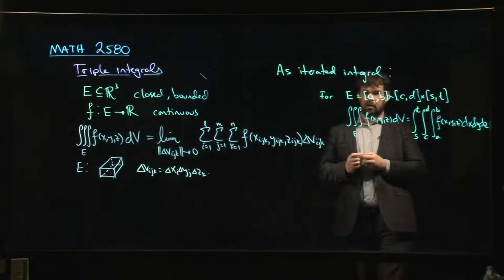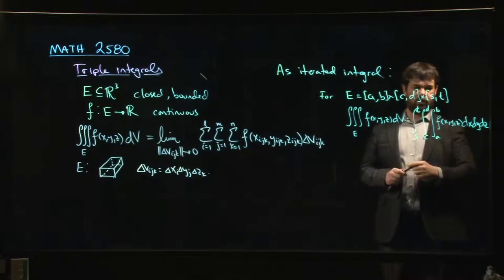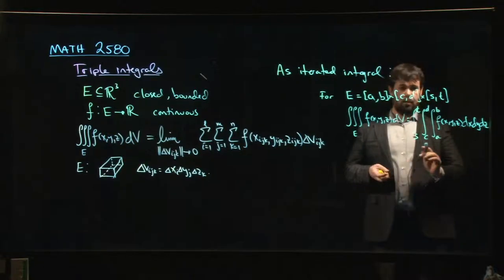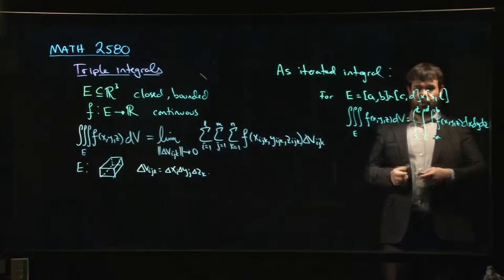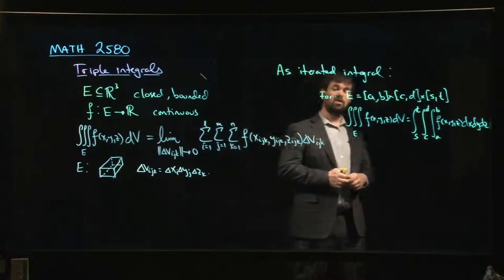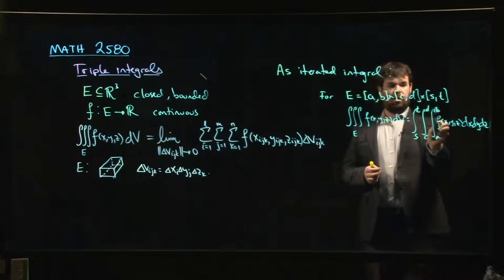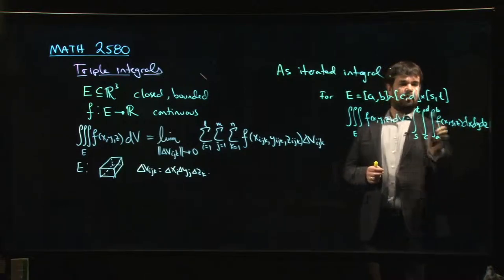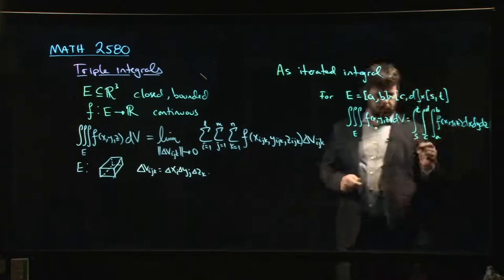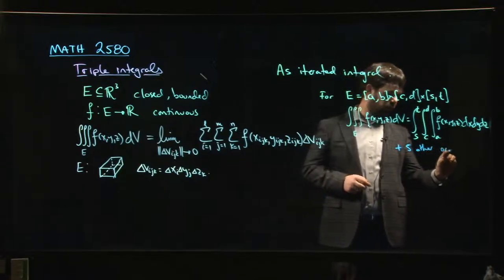And Fubini's theorem applies here just as it does for double integrals. So you're allowed to change the order of integration. So you can switch X and Y, you could switch X and Z, you could switch Y and Z. In fact, there are six possible orders here. You can do X, Y, Z, you can do X, Z, Y, you can do Y, X, Z, you can do Y, Z, X, you can do Z, X, Y, you can do Z, Y, X. There are six different orders. And all you got to do is make sure that the appropriate limits match up with the variables. As long as that goes, you can do this in whatever order you want. Fine. So let's just write that down. There are five other orders possible.